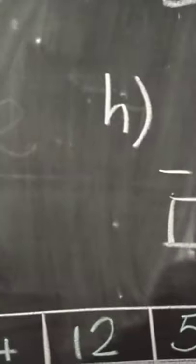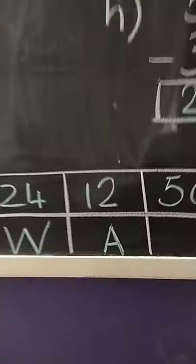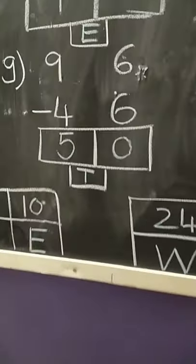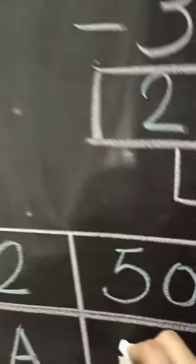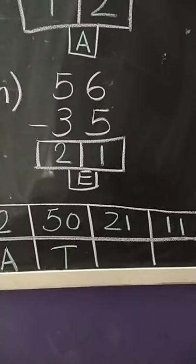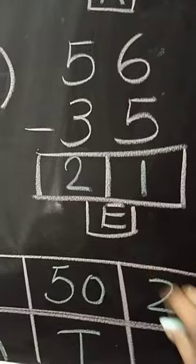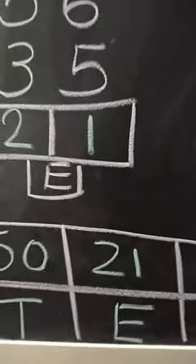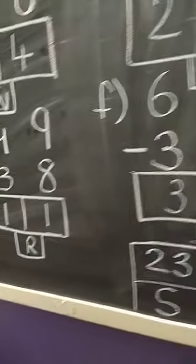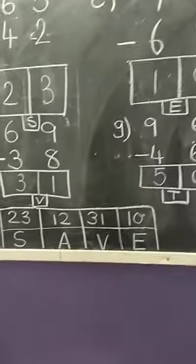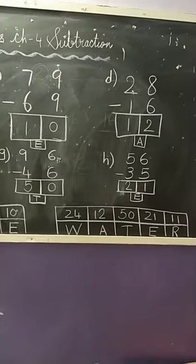Then it is 12 again — A. So, I will be writing A. Then 50 — below it there is T. So, I will be writing T. Then we have 21 — we have E. And number 11 — below 11 it is R. So, I will be writing R. So, here we get our hidden message: S, A, V, E — Save. And W, A, T, E, R — Water. You can see here kids, we got our hidden message. That is Save Water.